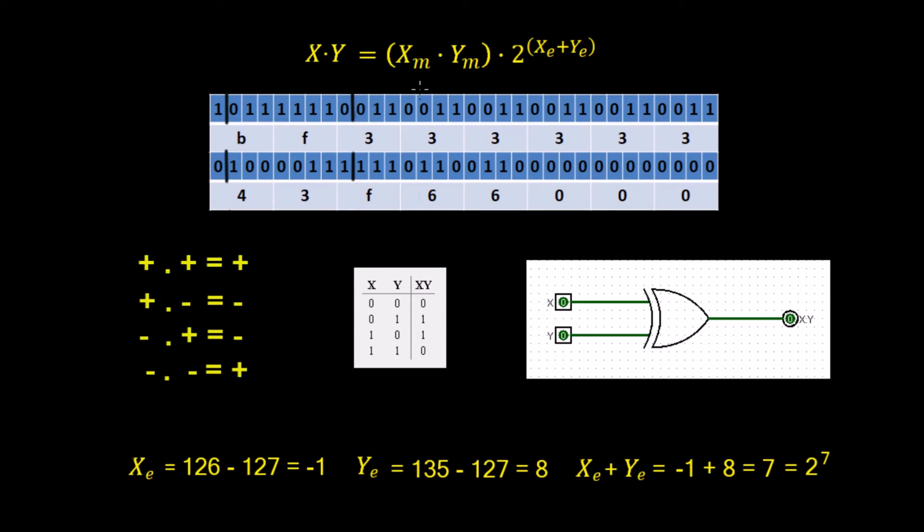We've already seen when we've worked through the multiplication that in order to multiply these two numbers together, let's call the top one X and we'll call the bottom one Y. Then we have to multiply the mantissa of X and the mantissa of Y, and we have to add the exponent of X and the exponent of Y. We've also got to take care of the sign, so the sign's the easiest part to do so let's go ahead and we'll do that now.